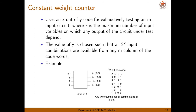Another method is the constant weight counter, where we use X out of Y code, where X is the maximum number of input variables on which the output is dependent. The value of Y is chosen such that all 2 power X combinations are available from any M columns. So that is 2 out of 4 code — any output is at most a function of 2 inputs. If you take any 2 columns, you will find all possible combinations: 0,0; 0,1; 1,0; 1,1. So we can exhaustively test all the outputs.